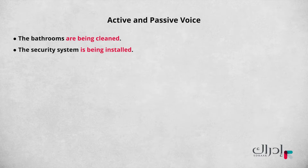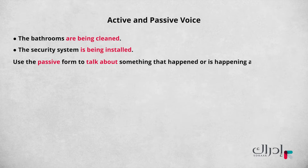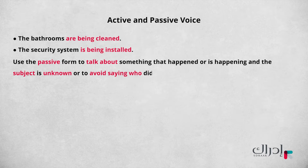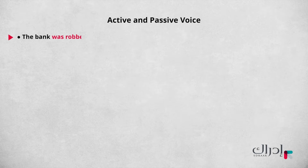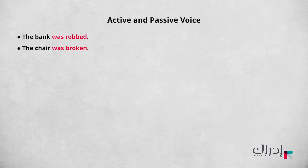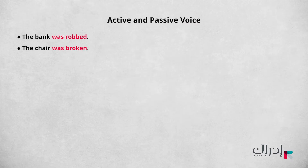We can also use the passive form to talk about something that happened or is happening when the subject is unknown or to avoid saying who did something. Look at these examples: 'The bank was robbed.' 'The chair was broken.' These sentences are both passive — we have the verb 'was,' the past tense of 'to be,' and the past participle 'robbed' and 'broken.' Who robbed the bank? We don't know or are not sure, which is a reason to use the passive. The same applies to who broke the chair. So we use the passive when we have a very general subject or we don't know who did the action.